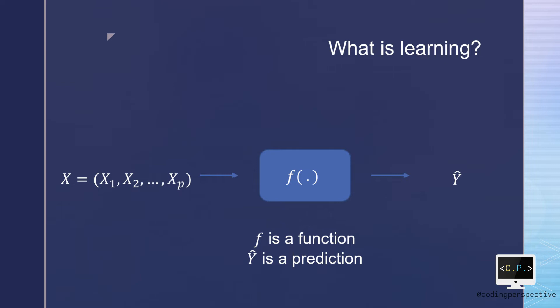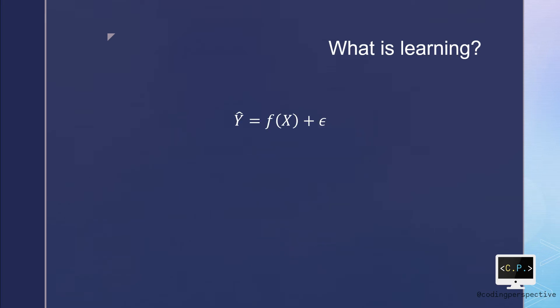Here, f is a fixed but unknown function and y hat is the prediction values. Note that the function f that connects the independent variables to the output variable is not generally known. So one needs to estimate the function based on the observed points.